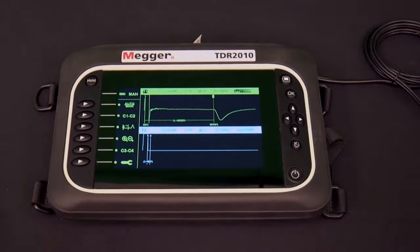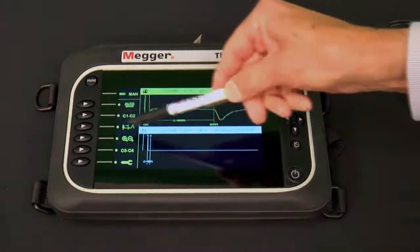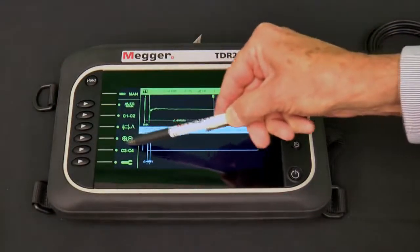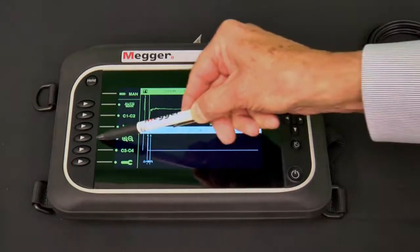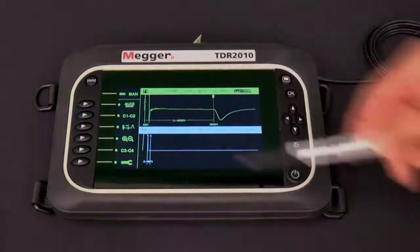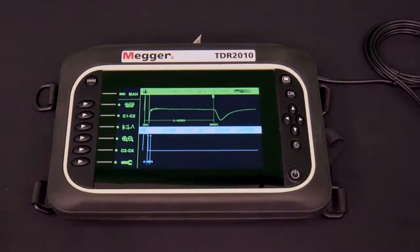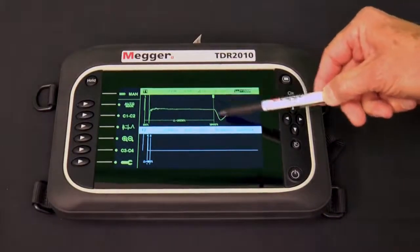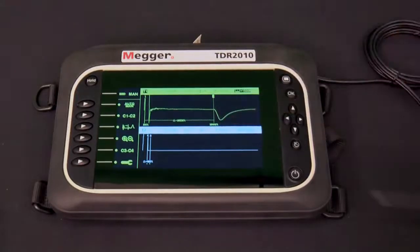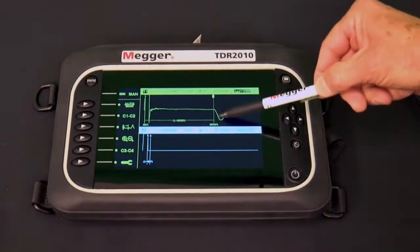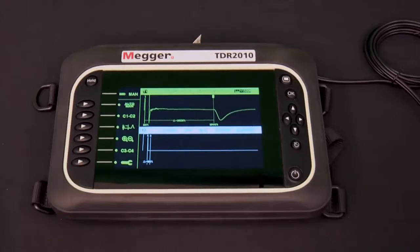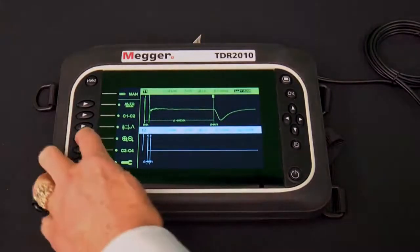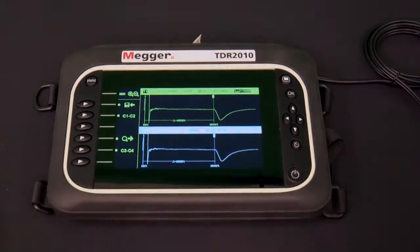Let's look now at the zoom function, which is controlled by the fourth soft key from the top, the one with the magnifying glass icons with plus and minus signs in them. The active trace is trace 1 and the active cursor of that trace is cursor 2. We have placed this cursor where we think the event is located.